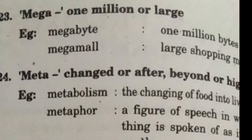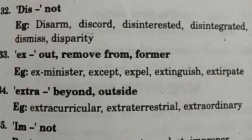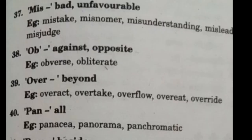'Mega' means one million or large. 'Meta' means changed, after, beyond, or higher. 'Anti' (A-N-T-I) means against or opposite. 'Auto' means self — for example, 'autobiography,' 'automatic,' 'automobile.' 'Dis' is used to indicate the opposite — for example, 'disarmed,' 'disinterested,' 'disintegrated.' 'Ex' means out or removed from — for example, 'ex-minister,' 'except,' 'extinguish.' 'Mis' means bad or unfavorable — for example, 'misunderstanding,' 'mislead,' 'misjudge.' 'Over' means beyond normal — for example, 'overact,' 'overtake,' 'overflow.'